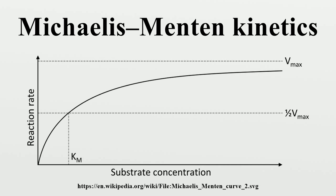When an empirical equation of this form is applied to microbial growth, it is sometimes called a Monod equation. Parameter values vary widely between enzymes. The constant kcat/Km is a measure of how efficiently an enzyme converts a substrate into product. Diffusion-limited enzymes, such as fumarase, work at the theoretical upper limit of 10^8 to 10^10 M⁻¹s⁻¹, limited by diffusion of substrate into the active site.